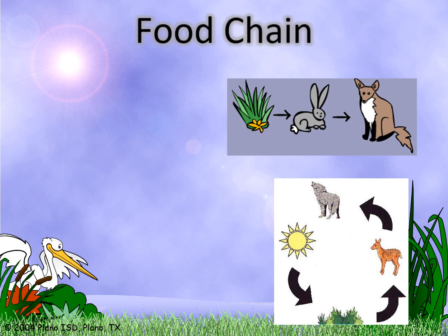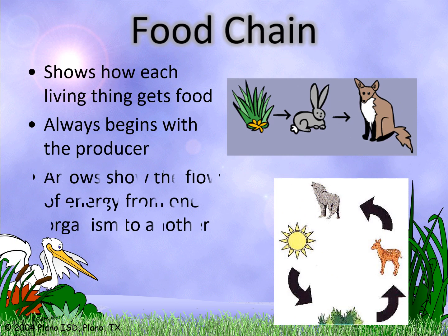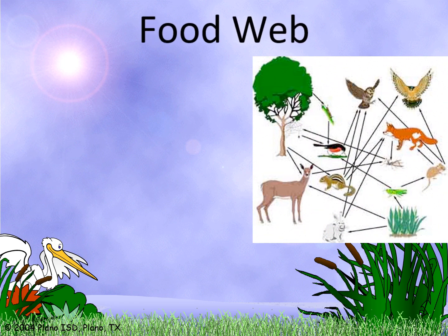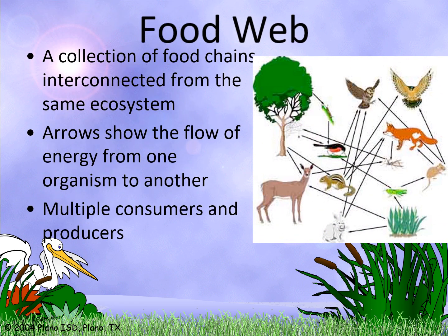In a food chain, each living thing gets food in a sequence that always begins with producers. Arrows show the flow of energy from one organism to another. A food web is a collection of food chains interconnected within the same ecosystem, with multiple consumers and producers.